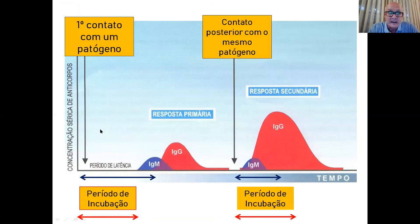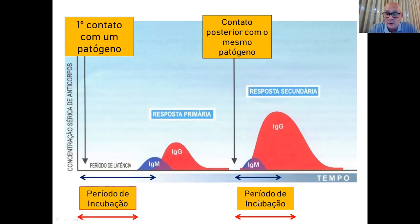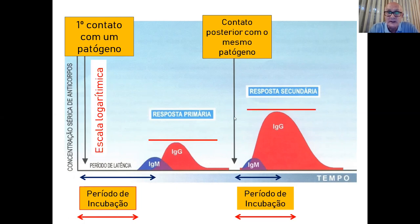Por isso as vacinas funcionam. O período de incubação de um patógeno é representado aqui: só após esse período o indivíduo começa a ter sintomas. Numa infecção sem imunidade prévia, o pico de resposta primária é atingido quando o período de incubação já passou — já ficamos doentes. Com a resposta secundária, muito mais elevada e formada por IgG, o pico é atingido antes do término do período de incubação. E como essa escala é logarítmica, numa resposta secundária podemos ter mil, dez mil ou cem mil vezes mais anticorpo.